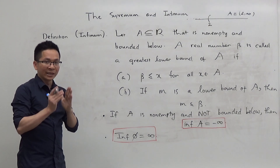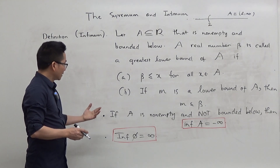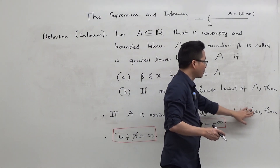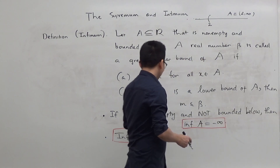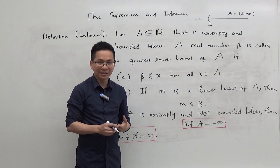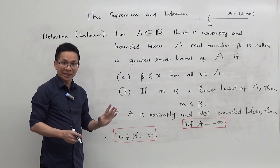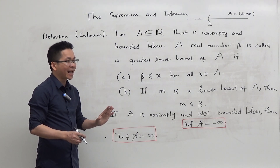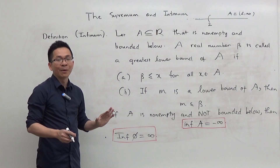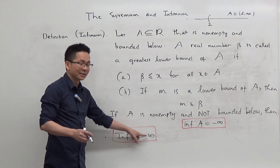To have a complete picture for the lower bound of a set, by convention, if A is non-empty and not bounded below, then the infimum of A is defined as minus infinity. And in the case where A is the empty set, any real number is a lower bound of A, so by convention the greatest lower bound of A is infinity.